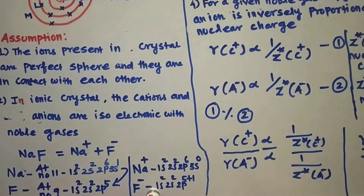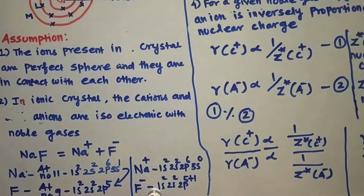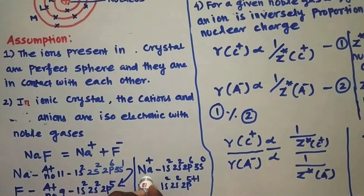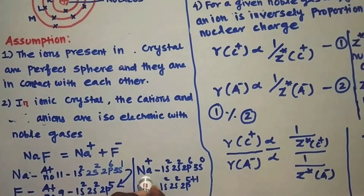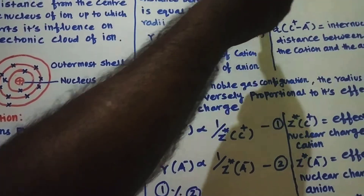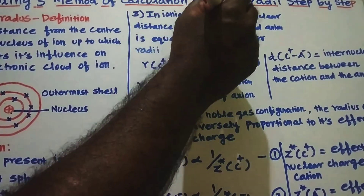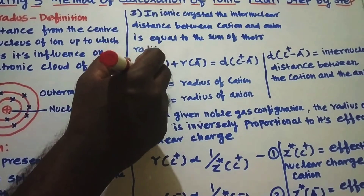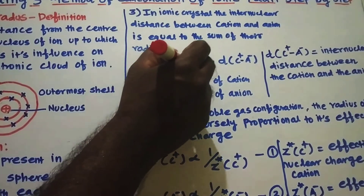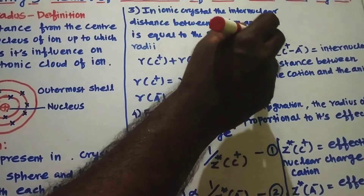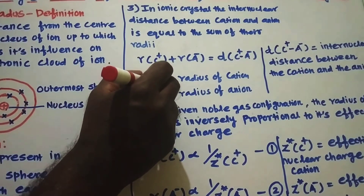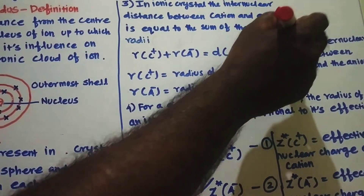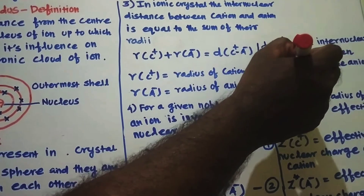Now, the electronic configurations of Na⁺ and F⁻ are isoelectronic with the neon electronic configuration, because for neon, atomic number is 10, with configuration 1s², 2s², 2p⁶. Therefore both Na⁺ and F⁻ ions are isoelectronic with the neon noble gas configuration. Assumption number three: in ionic crystal, the internuclear distance between cation and anion is equal to the sum of the radii: R(C⁺) + R(A⁻) = D(C⁺, A⁻), where R(C⁺) is the radius of the cation, R(A⁻) is the radius of the anion, and D(C⁺, A⁻) is the internuclear distance between them.